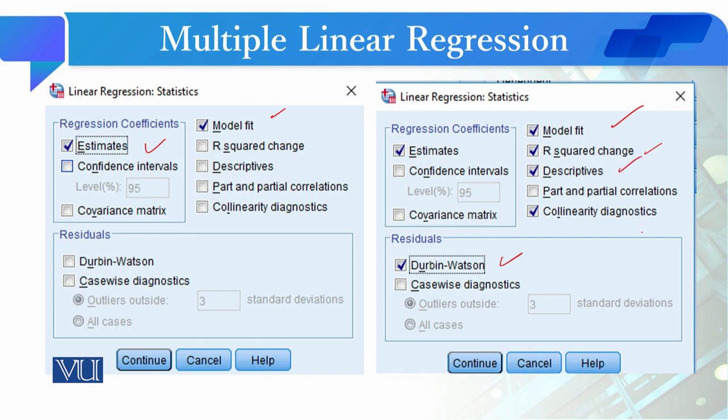Descriptives, collinearity diagnostics. Linear regression ki ek ek assumption yeh bhi hai ke jab hum multiple linear regression conduct kar rahe hain to jo independent variables hain unke darmiyaan jo hai autocorrelation nahi hona chahiye.